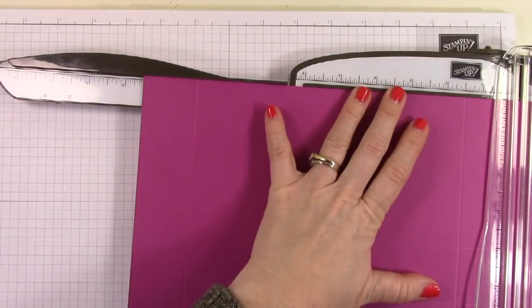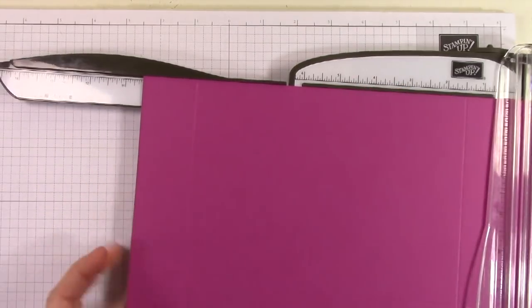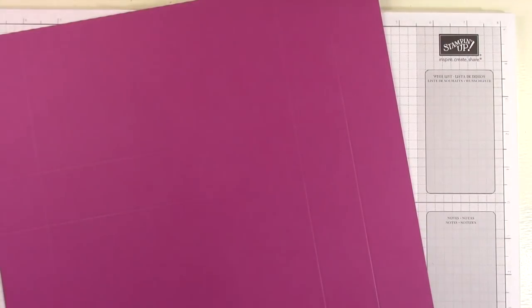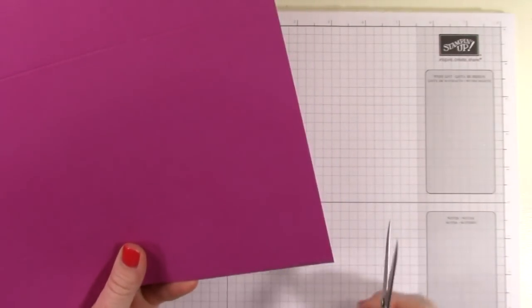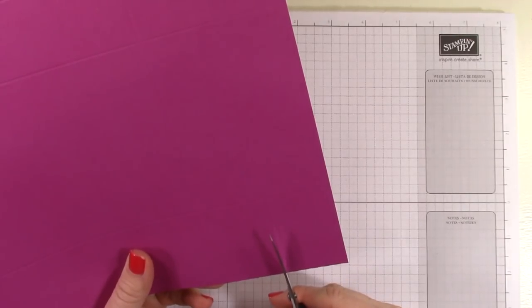So after I finished all my scoring, I'm going to grab the box and start doing some paper snipping. We need to cut away a few places so that the box will fold up appropriately. So you're going to cut away this top.